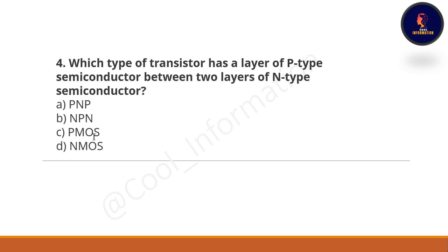Next question: Which type of transistor has a layer of P-type semiconductor between two layers of N-type semiconductor? Is it PNP, NPN, PMOS, or NMOS? The correct option is NPN.